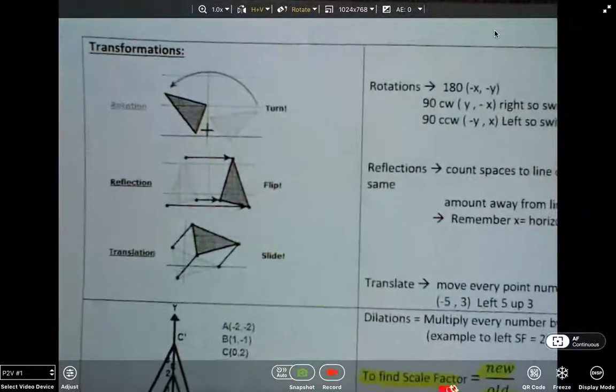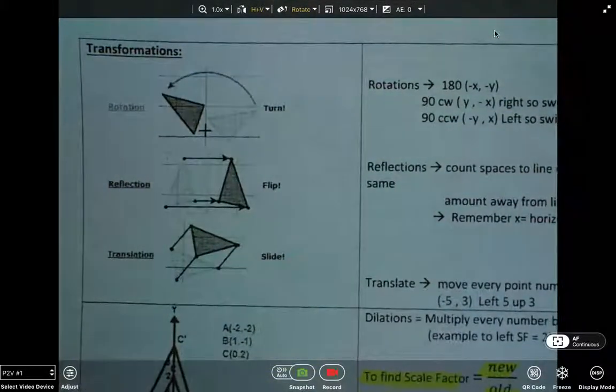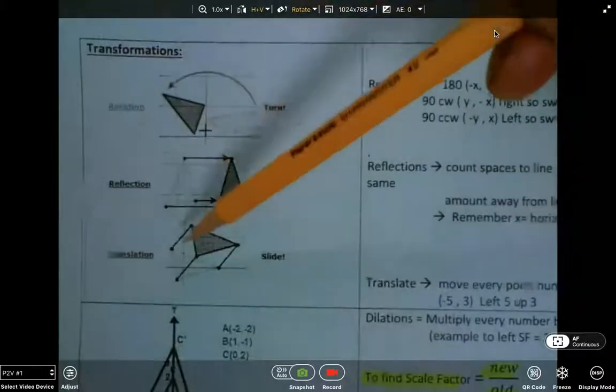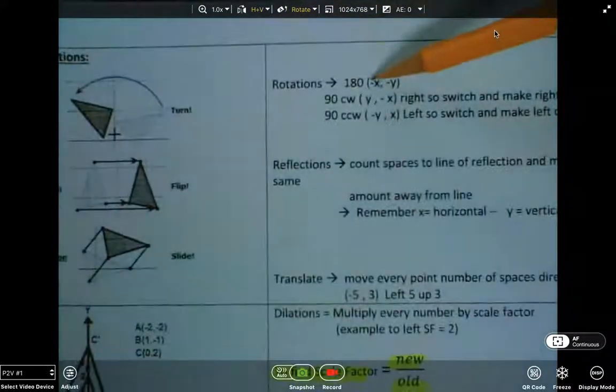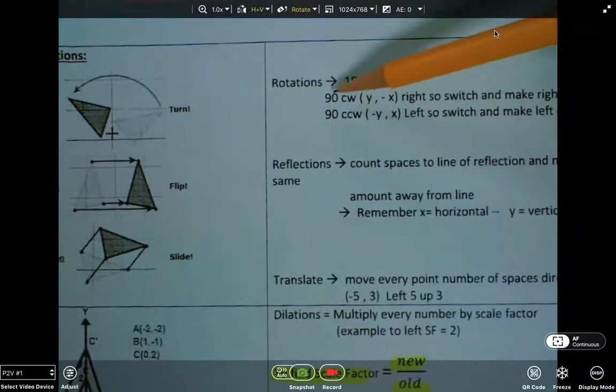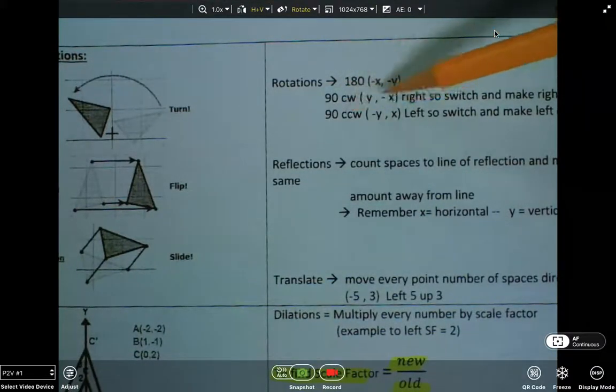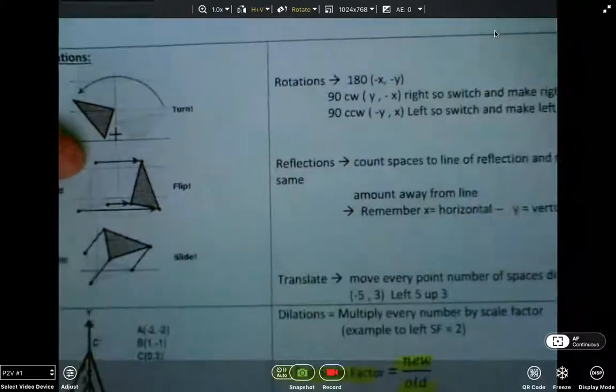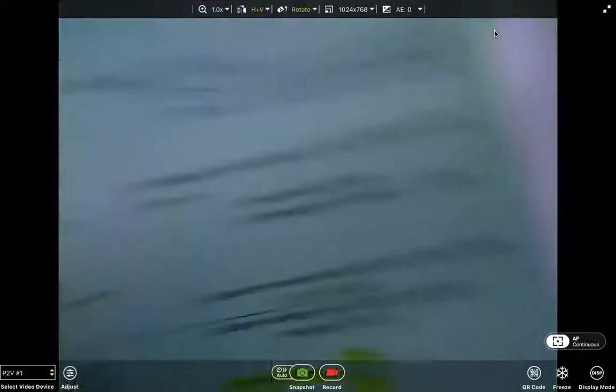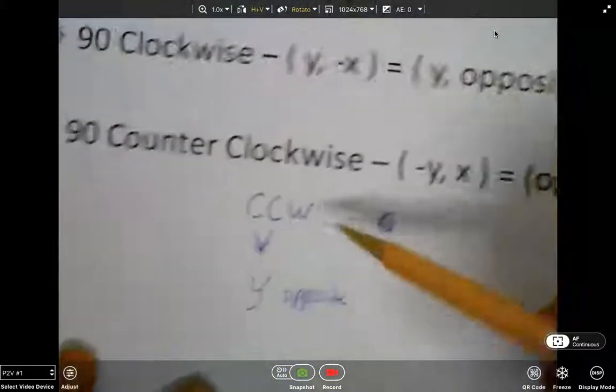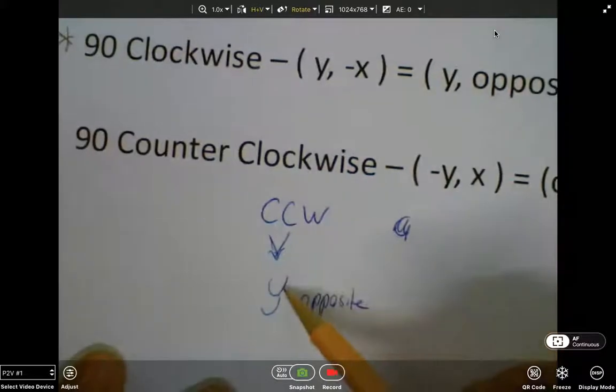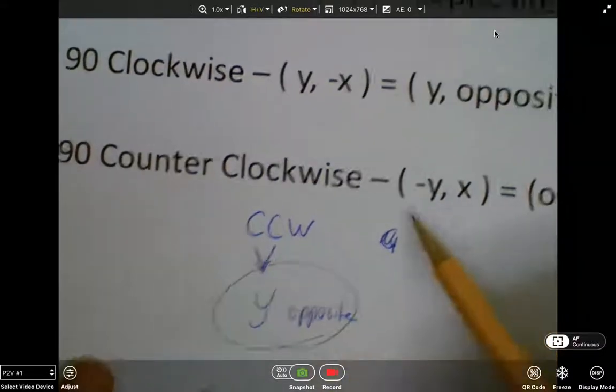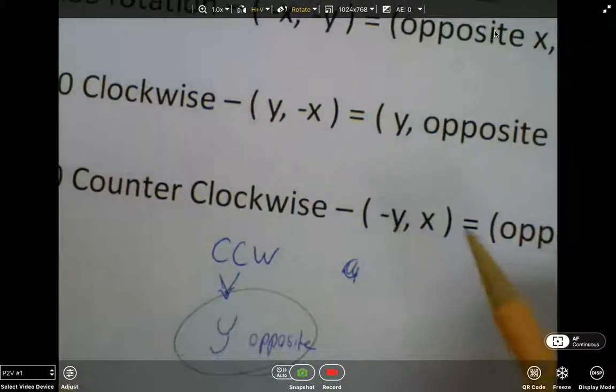Later on, actually, the first topic we did in 8th grade was about transformations. We learned about rotating, reflecting, and translating. Remember, rotating was the hardest. If it was 180, you just made x and y opposite. But if it was 90 clockwise or 90 counterclockwise, you would flop x and y. And then we learned to remember to make y opposite, that you take the cc in counterclockwise, change it to a y, and that tells you to make the y opposite when you're transforming.